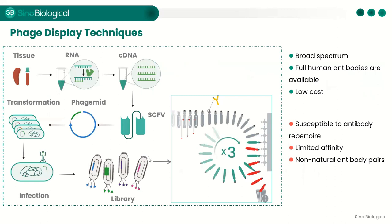The second generation of antibody development uses phage display, another commonly used antibody screening technology. In this technique, antibody gene fragments are cloned in vitro and inserted into the structural gene of the phage coat proteins. Antibodies are then displayed on the surface of the phage via expression of fusion proteins—this step is called phage library construction. Antigens are then used to screen the phage library for specific monoclonal antibodies in a step known as biopanning.